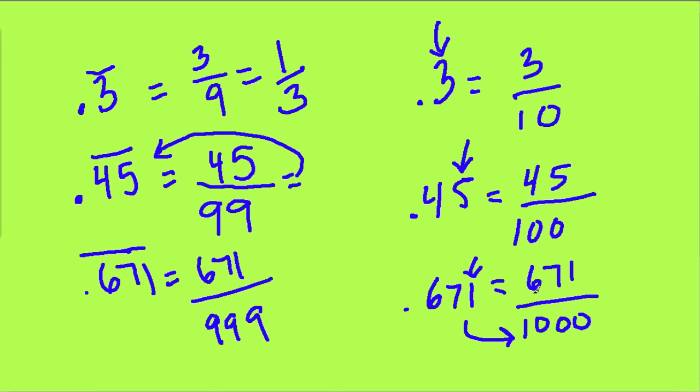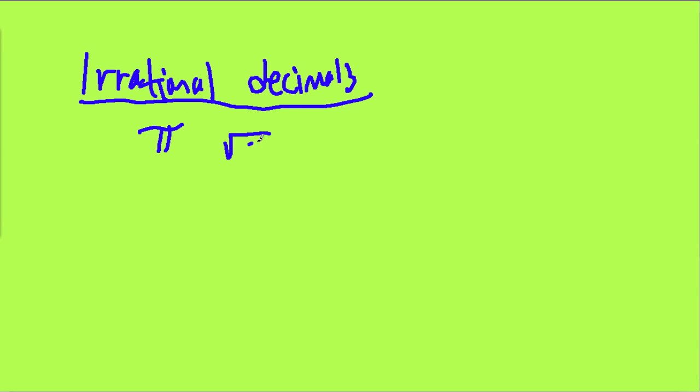What about irrational? Irrational decimals - something interesting about them, you can't actually write them down or write them out. You can never see them in a multiple choice. You can only see symbols like pi or the square root of whole numbers that have decimal answers, like square root of 2, square root of 3, square root of 8.